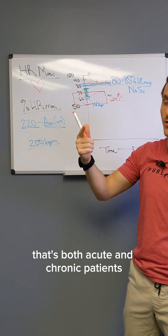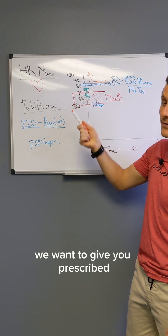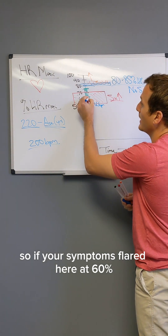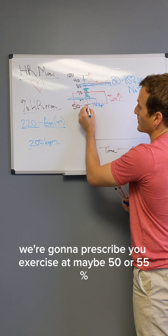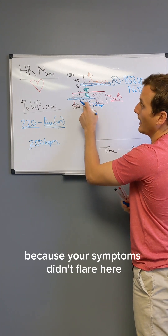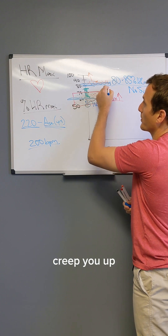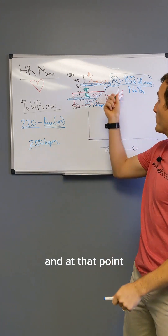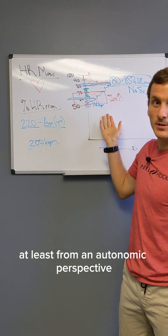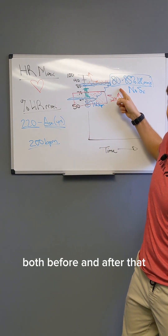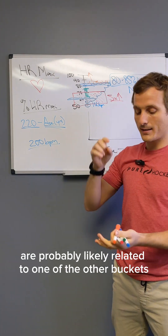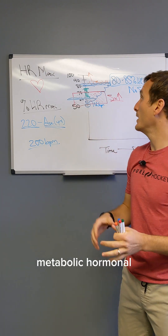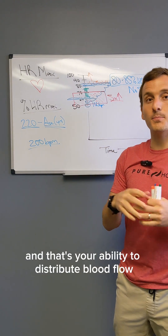In the concussion world, we see symptoms flare between 50 and 70% — both acute and chronic patients. We prescribe sub-symptom aerobic exercise: if your symptoms flared at 60%, we prescribe exercise at maybe 50 or 55%, where symptoms didn't occur, and we slowly build tolerance — creeping you up until you can tolerate 80 to 85% of heart rate max without symptoms. At that point, we consider you clinically and physiologically recovered from an autonomic perspective. Any remaining symptoms are likely related to your visual, vestibular, cervical, psychological, metabolic, or hormonal systems — but the blood flow distribution bucket has been checked off.